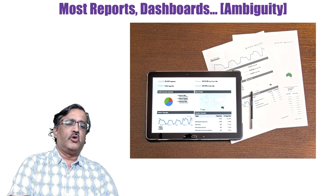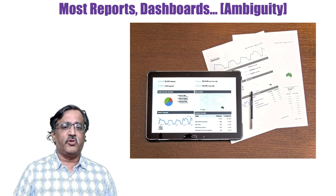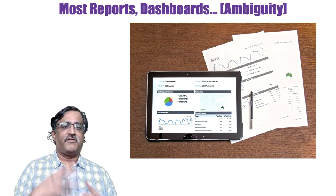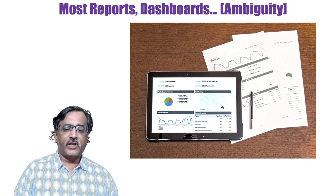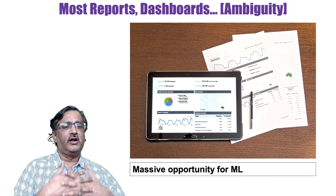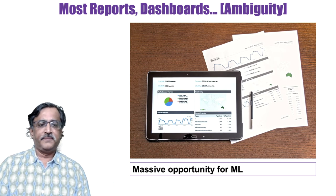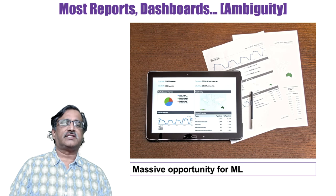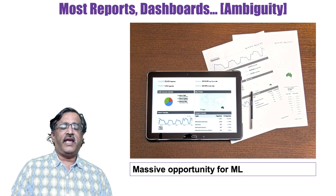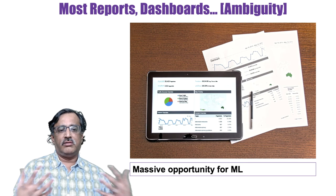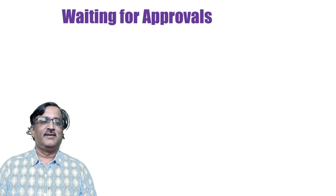Reports and dashboards — more broadly business intelligence — are another major example. I look at a graph and what am I supposed to do? I am supposed to interpret the graph, decide what is going on, and what decision I have to make. With machine learning, can I not auto-suggest those decisions to the human being? This is a massive opportunity, and ambiguity, of the five A's I have talked about, is one of the biggest opportunities for digital transformation.